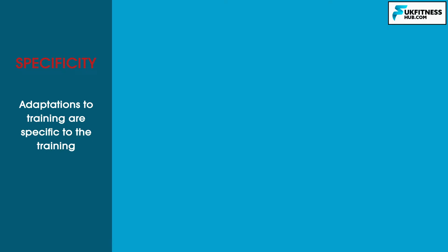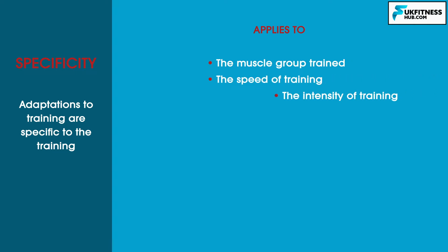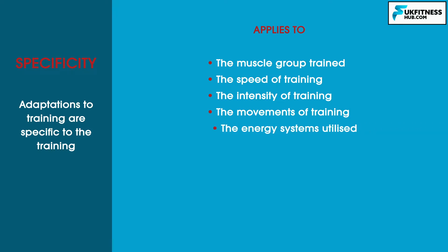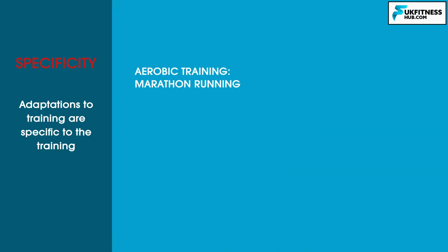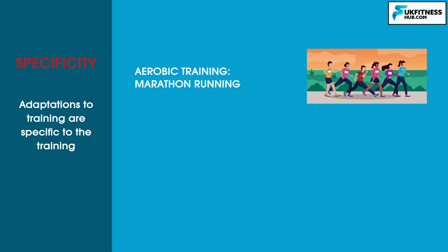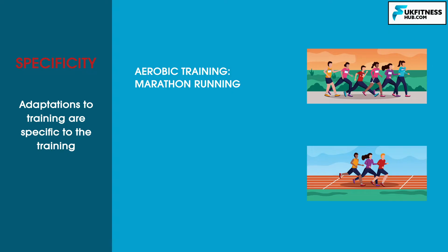The principle of specificity means that adaptations to training are specific to the training. Specificity applies to the muscle group trained, the speed of training, the intensity of training, the movements of training, and the energy systems utilised. Physiological adaptations only occur in response to the stress placed on the body, and only to the sections that experience this stress. For example, if you participate in an aerobic sport such as marathon running, you need to do aerobic training that involves running so that your adaptations improve your performance in that sport.